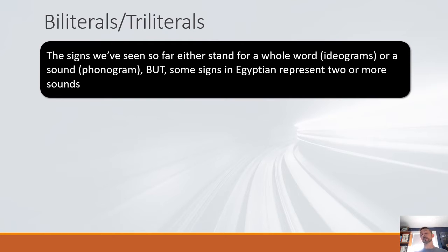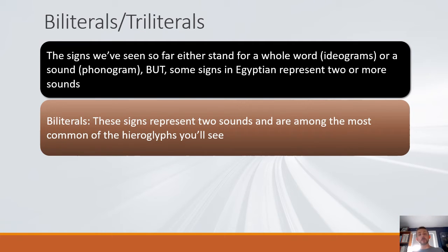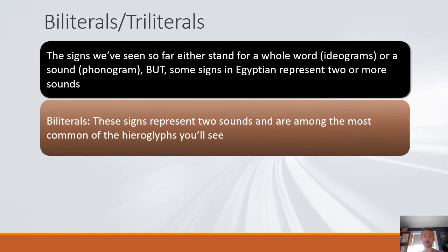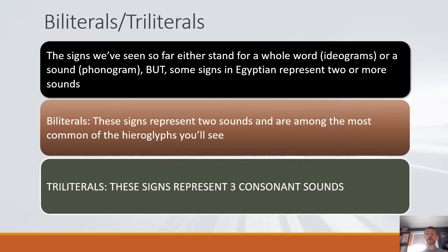There are possibilities in Egyptian for a sign to represent more than one sound — two sounds at once. The first group of these are called biliterals. These are signs where the ideogram stands for two different sounds that together can be used to make words. The biliterals you encounter in Egyptian are probably some of the most common hieroglyphs you'll ever see. It's also possible in ancient Egyptian for a symbol to represent three or more sounds, and these are triliterals.